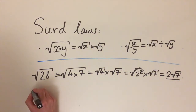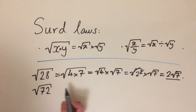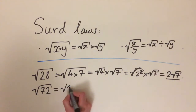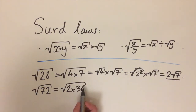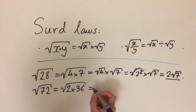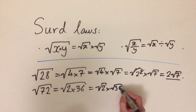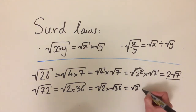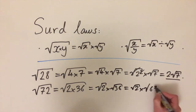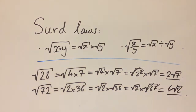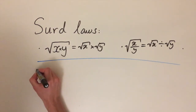Let's do another example: the square root of 72. Using the same method, we factorize 72. Since it's even, we can write it as 2 times 36, and 36 is actually a square number so we leave it. Using the law of multiplication, this is the square root of 2 times the square root of 36. Since 36 is 6 squared, the square root and the square cancel out, giving us 6 times the square root of 2 as the simplified form.